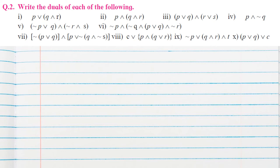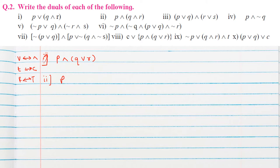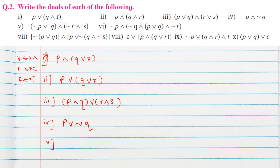Question number 2: Write the dual of the following statements. To find the dual, we change 'or' to 'and' and 'and' to 'or'; P and C change to tautology and contradiction; true and false are swapped. Question 1 dual: B and Q or R. Question 2 dual: P or Q or R. Question 3 dual: P and Q or R and S. Question 4 dual: P or negation Q — negation is unaffected, only 'and'/'or' changes.